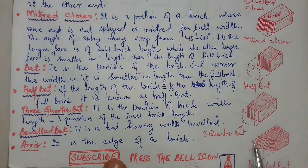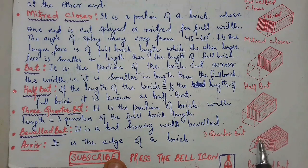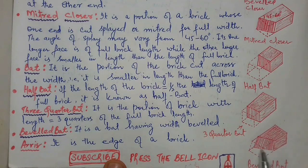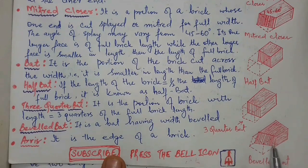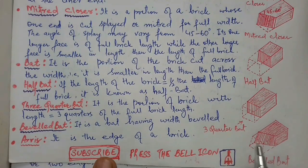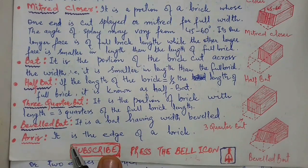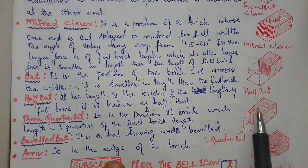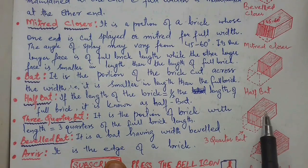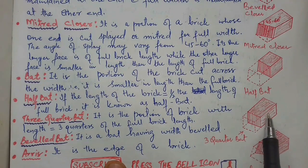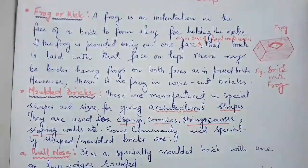Beveled bat: if you have a bat and its width is beveled — that is, it is cut in slope — you can call it a beveled bat. Arris: it is the edge of a brick. Any one edge of the brick you can call arris.